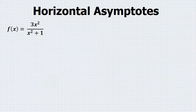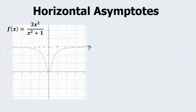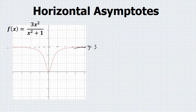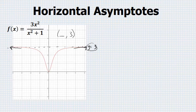Horizontal asymptotes can also occur in functions. This function has a horizontal asymptote at the line y = 3. The graph will get closer and closer to it as it goes to infinity, and closer and closer to it as it goes to negative infinity, yet never reach a y value of 3. There is no point on this graph that has the form (some number, 3) — it gets closer and closer, but never touches it.